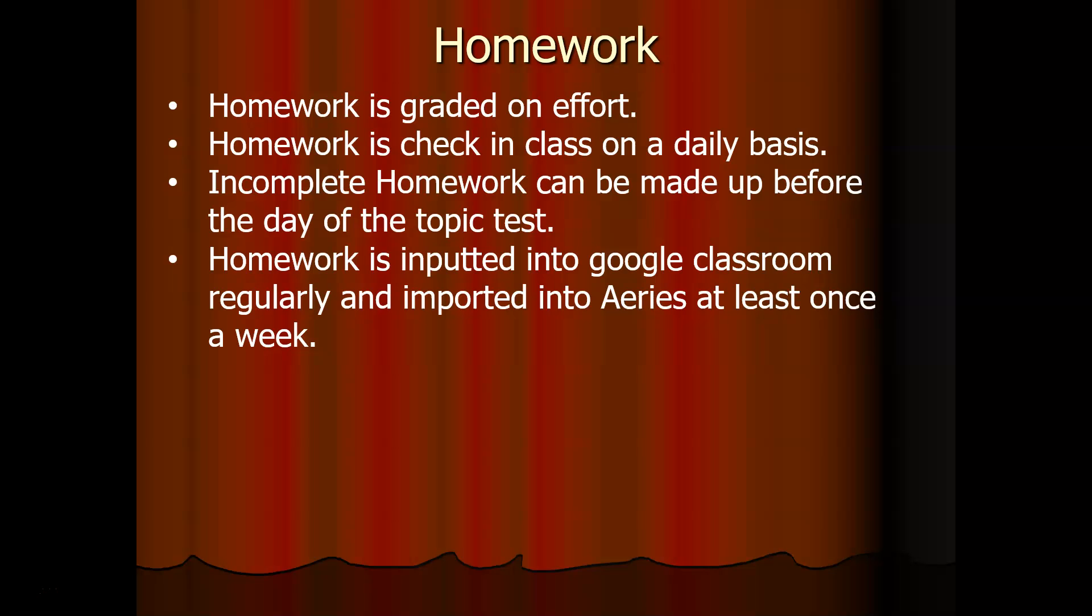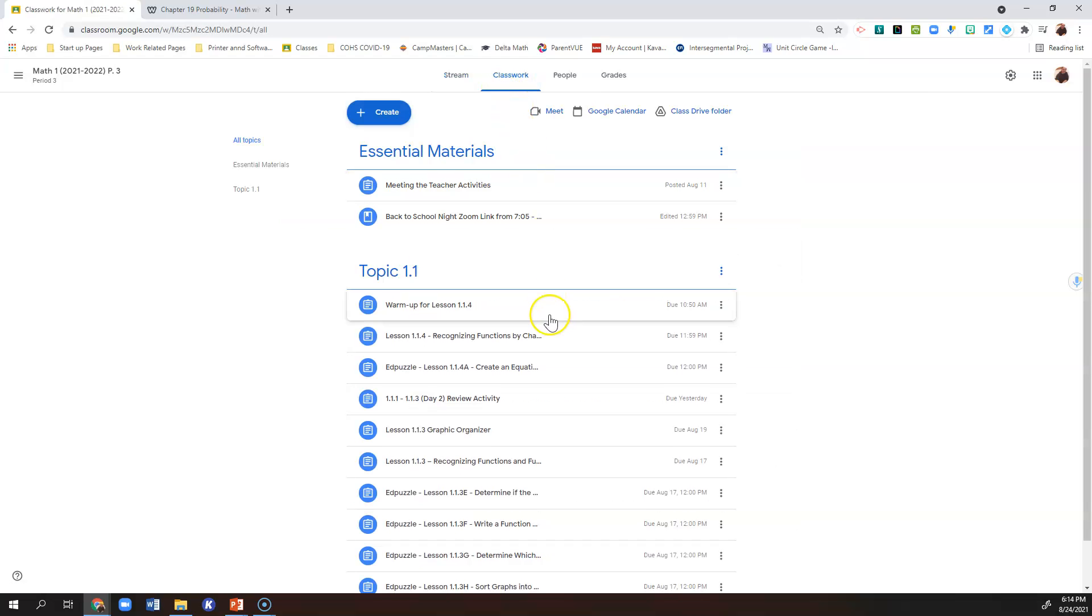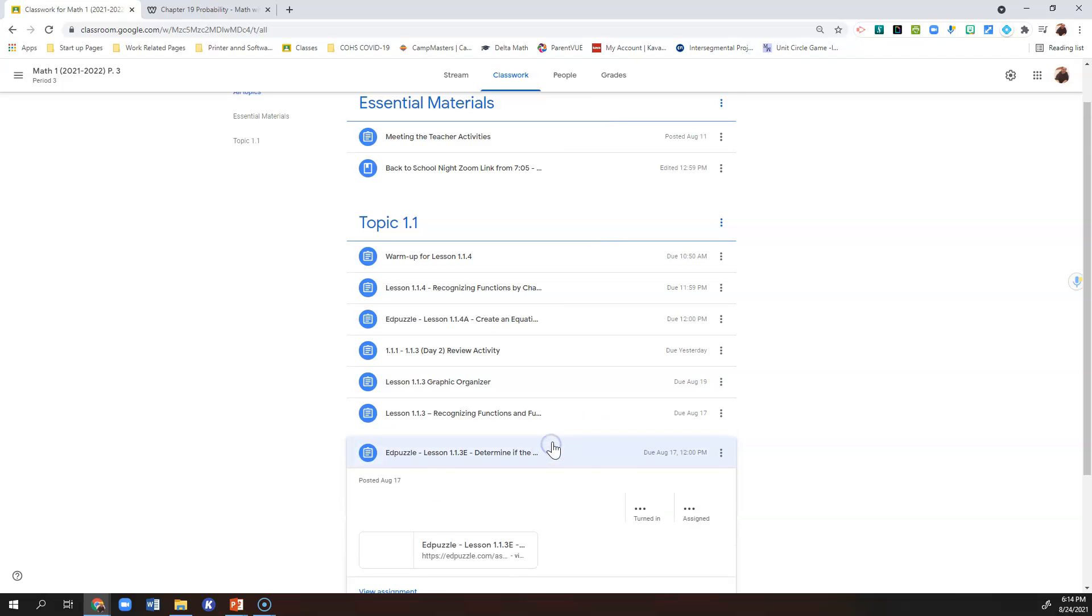Some things you need to know about Google Classroom: that is where all the scores go initially. If you want to see on a daily basis if your child is doing their work, you want to have them go into their Google Classroom, click on classwork, and pull the assignments up and show you.